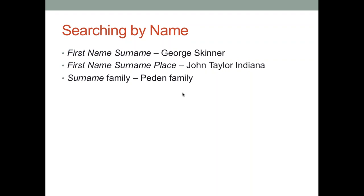Another search term to think about is searching for just the surname and the word 'family' — in this case, 'Peden family.' That's exactly how I found that Bible record I showed a moment ago. A lot of Bible records don't have all of the individual names in the catalog — it's just simply the 'Peden family Bible.' So if you do a search for 'Peden family,' that can help you turn up a lot of resources specific to that family.